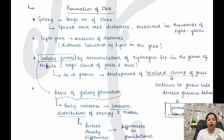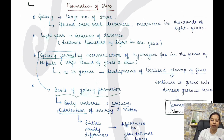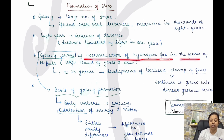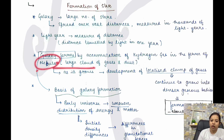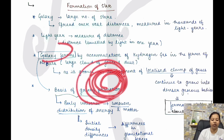Now the question is how stars are formed; in further classes we will also talk about planet and earth formation. Quickly revising galaxy: a large number of stars in a group spread over vast distances, measured in thousands of light years — light year being a measure of distance, not time; the distance travelled by light in one year. Galaxy is assumed to be formed by accumulation of hydrogen gas in the form of nebula — a large cloud of gases and dust. Accumulation of hydrogen gas led to the formation of a galaxy.